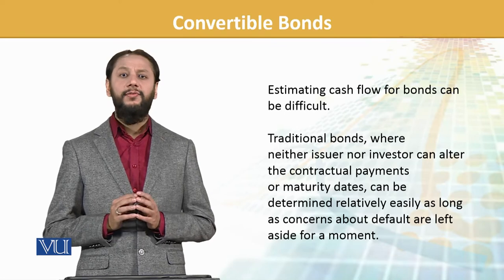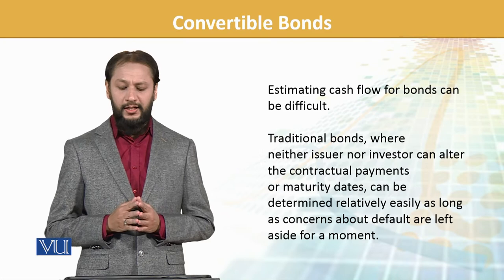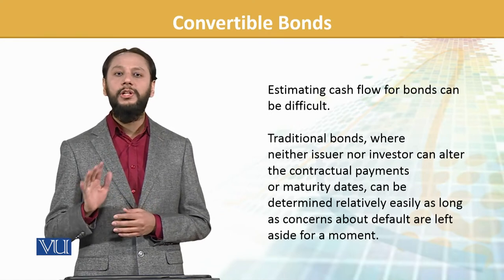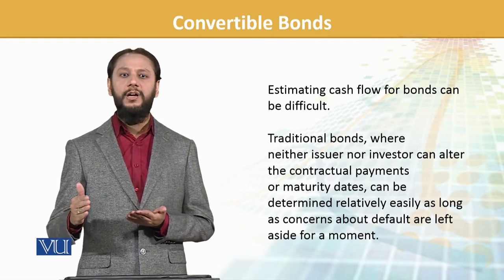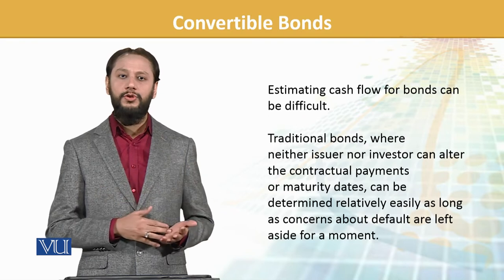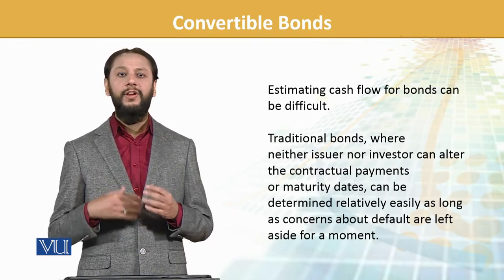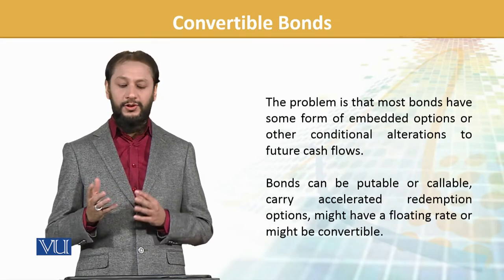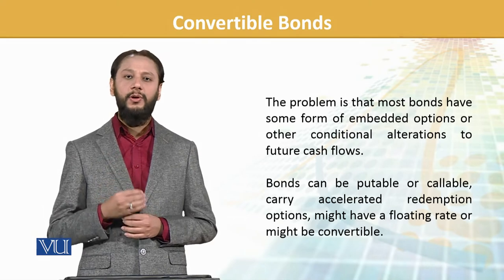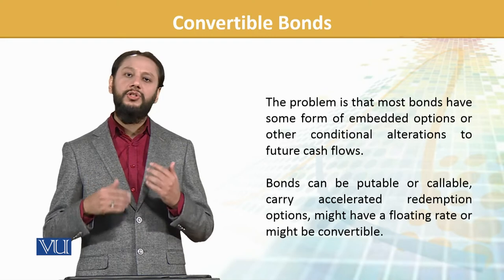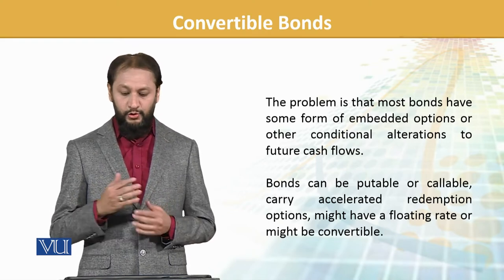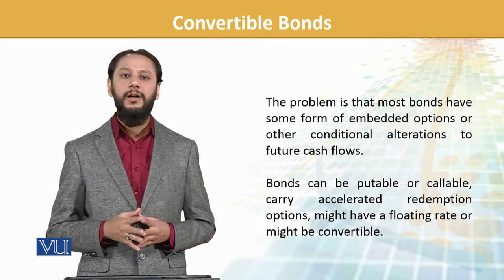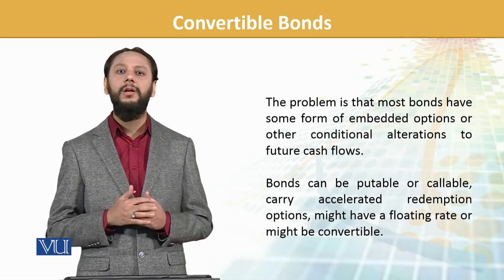Estimating cash flows for bonds can be difficult. Traditional bonds, where neither issuer nor investor can alter contractual payments, can be determined relatively easily — ان کا defined pattern ہے۔ However, the problem comes because most bonds have some sort of embedded options, جیسے callable, putable, accelerated redemption یا floating rates۔ ان options کی وجہ سے valuation میں difficulty آ جاتی ہے کیونکہ conditions involve ہو جاتی ہیں۔